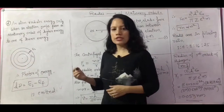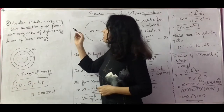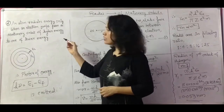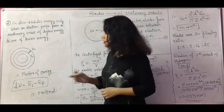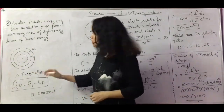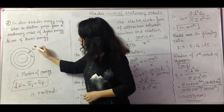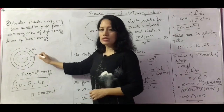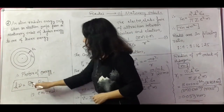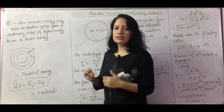The second postulate of the Bohr atom model is that an atom radiates energy only when an electron jumps from a stationary orbit of higher energy to one of lower energy. If the electron is in an orbit with energy Eᵢ and jumps to another orbit with energy Eᶠ, then a photon of energy hν, which is equal to the difference in energy of the initial and final energy levels, is emitted.